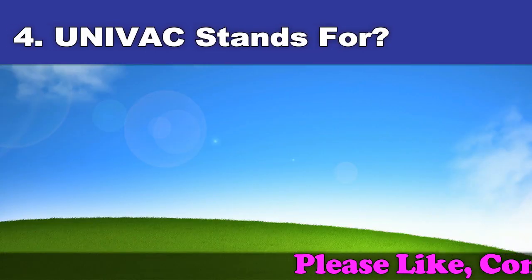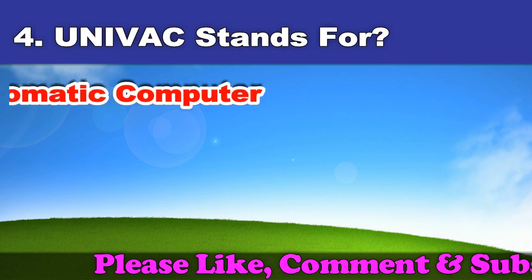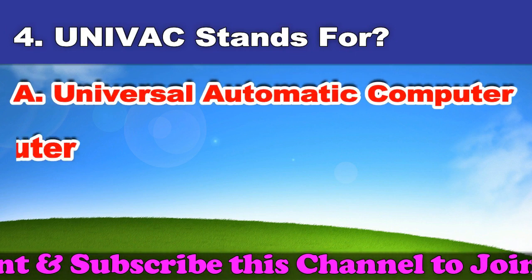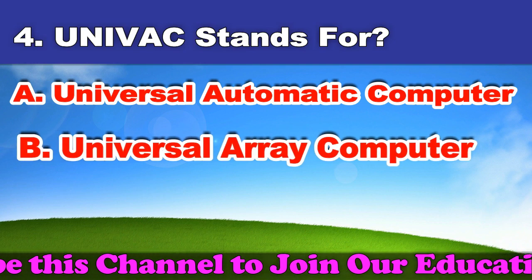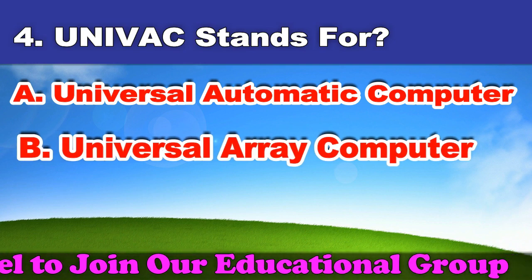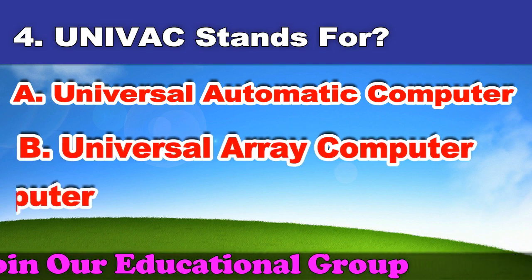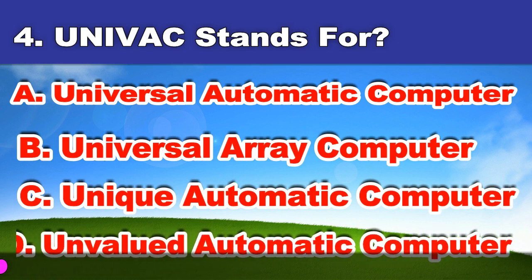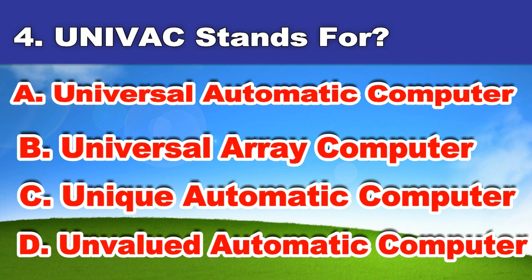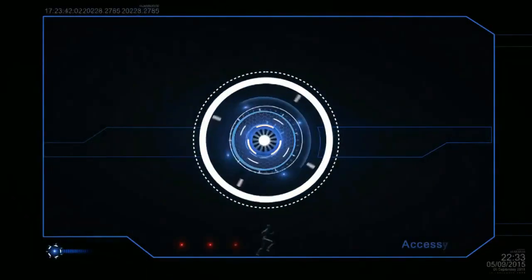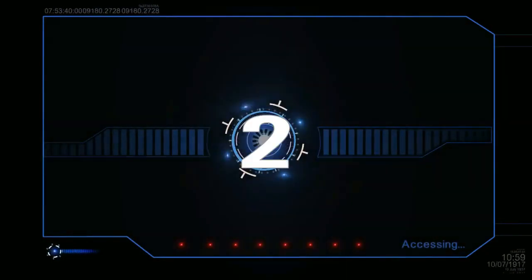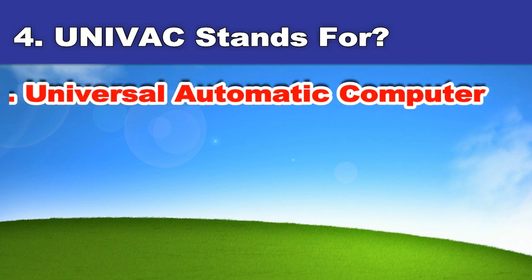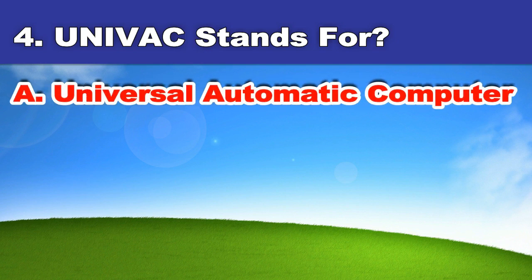Fourth question: UNIVAC stands for? A. Universal automatic computer. B. Universal array computer. C. Unique automatic computer. D. Unvalued automatic computer. And the answer is universal automatic computer.